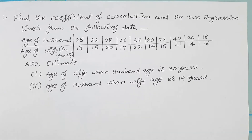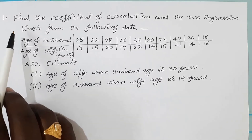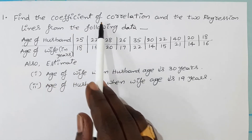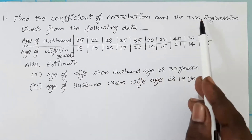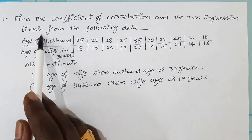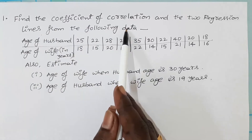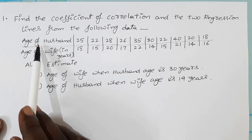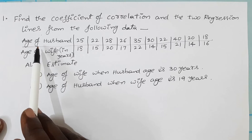Hi everyone, welcome back to our channel. In this video I would like to give an example on correlation coefficient. See the statement of the given problem: find the coefficient of correlation and the two regression lines from the following data. By using this data you have to find out the coefficient of correlation and the two lines of regression.